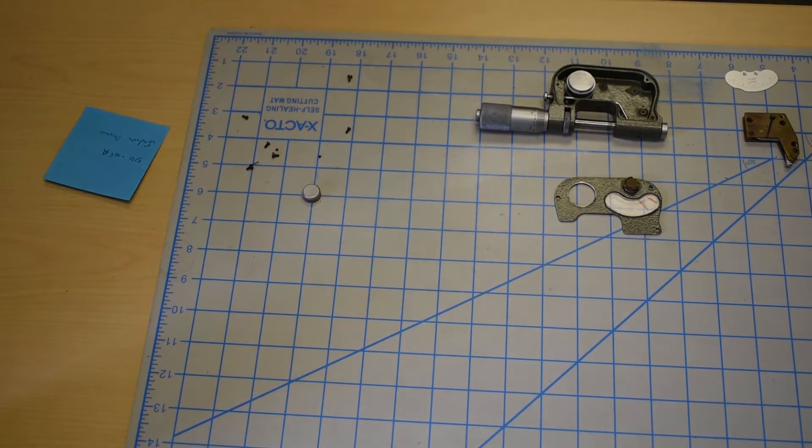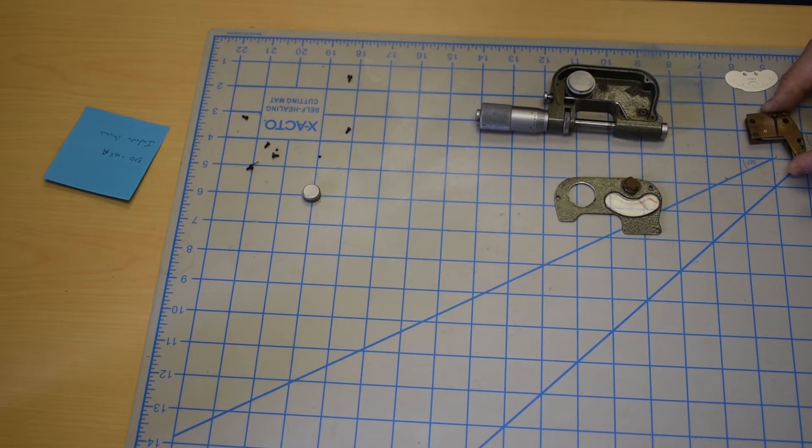Okay guys, we've got the Mitutoyo 510-105A indicating micrometer apart. And what I've done was I've cleaned it as thoroughly as possible. You know, I'm not a watchmaker by any means. I know these little mechanisms are quite delicate.